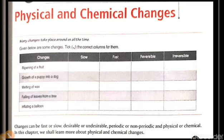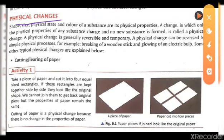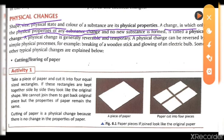Now, what is a physical change? A physical change means a change in the shape, size, physical state, and color of a substance. These are called physical properties. A change in which only the physical properties of a substance change and no new substance is formed — in this case, the shape, size, and physical state are changed, but no new substance is formed.